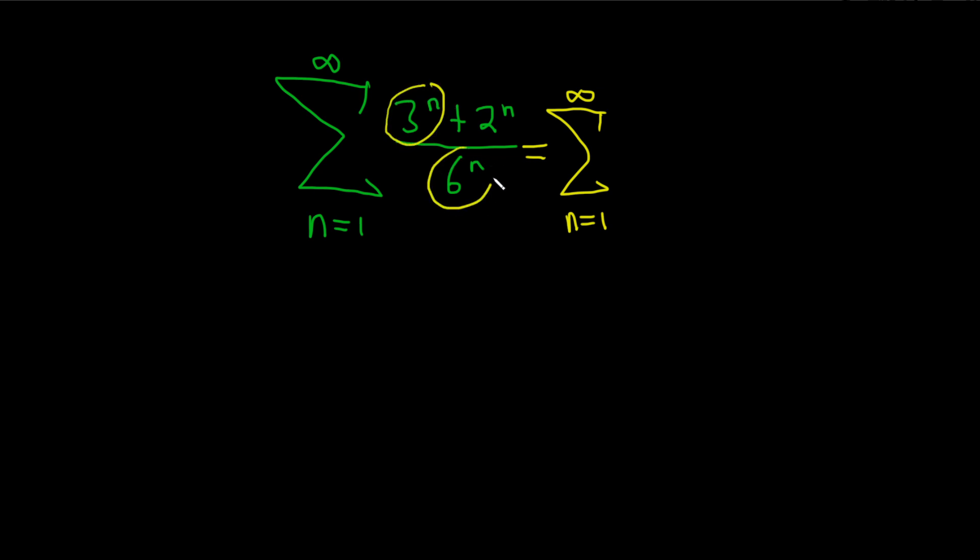and we can take the 3 to the n and just divide it by the 6 to the n. So this is 3 to the n over 6 to the n, plus, and then 2 to the n over 6 to the n. And we're supposed to have a parenthesis right here.